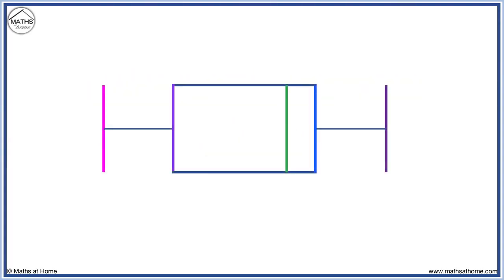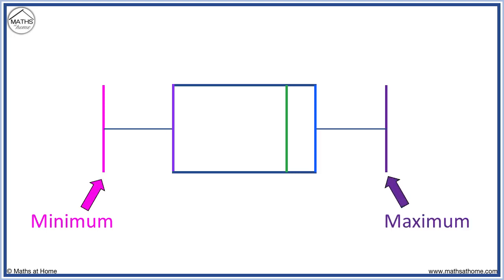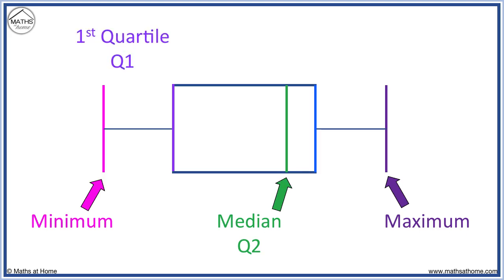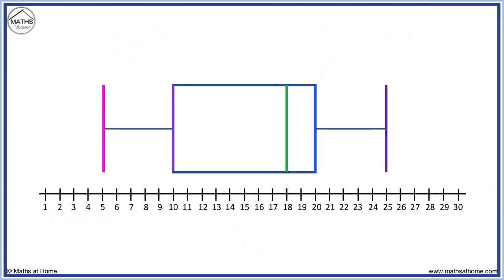Here is a box plot. We can read a five-number summary from the lines on the box plot. The minimum is shown by the position of the first line, and the maximum is shown by the position of the final line. The median, also known as the second quartile or Q2, is shown in the middle with the line inside the box itself. The first quartile is the position of the line which starts the box.